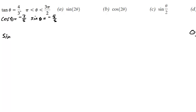Starting off, sine of 2θ is going to be equal to 2 times negative 4 over 5 times negative 3 over 5, which is equal to 24 over 25.